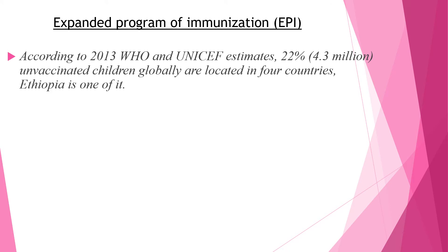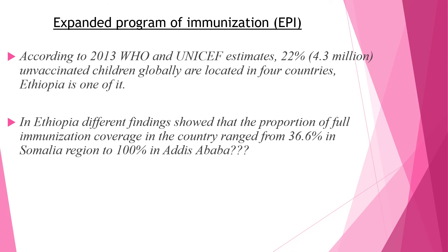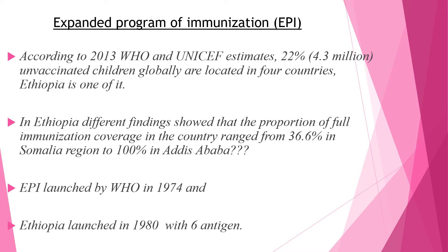In Ethiopia, different findings showed that the proportion of full immunization coverage in the country ranged from 36.6 percent in Somali region to 100 percent in Addis Ababa. EPI was launched by WHO in 1974, and Ethiopia launched it in 1980 with six antigens.